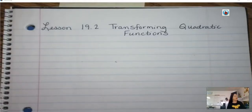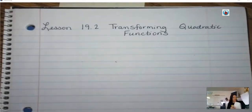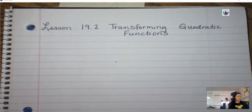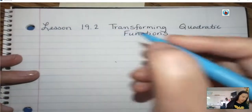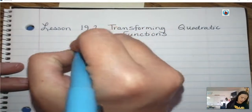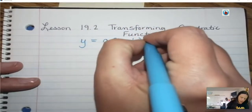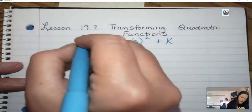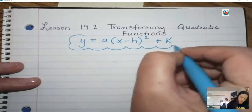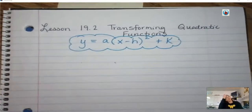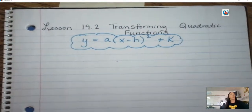Today we're working on transforming quadratic functions — that's when we are moving the graph. All of the quadratics today are going to be written in a special way. It's going to look like this: y equals A times x minus H squared plus K. When it's written like this, we can tell certain things are happening with the graph.